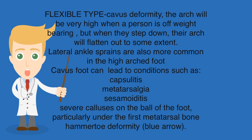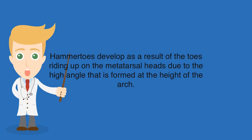Lateral ankle sprains are also more common in the high arched foot. Cavus foot can lead to conditions such as capsulitis, metatarsalgia, sesamoiditis, and severe calluses on the ball of the foot, particularly under the first metatarsal bone. Hammer toe deformity develops as a result of the toes riding up on the metatarsal heads due to the high angle that is formed at the height of the arch.